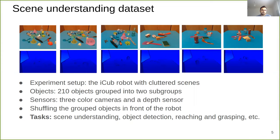In the first group of the data sets we have 10 objects in the scenes, and we also repeat this procedure for 20 objects. We propose that this data set can be employed for scene understanding, object detection, object pose estimation, and reaching and grasping an object by the robot.